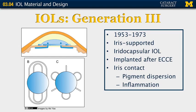The third generation lenses are from the early 1950s into the early 1970s, and this is yet another completely different design in which the iris was used to support the lens. The diagrams below show some of the designs of iris clip lenses, and the top image shows how that lens was held in place around the iris. These lenses had constant iris contact and ultimately led to pigment dispersion as well as chronic inflammation.